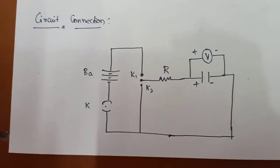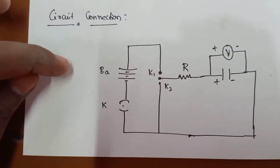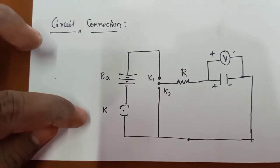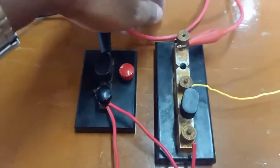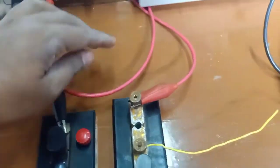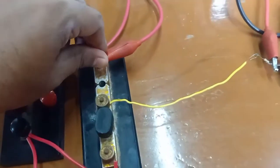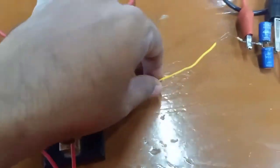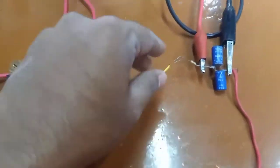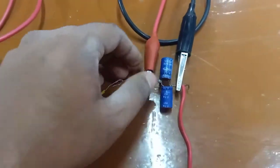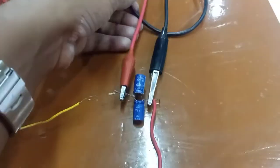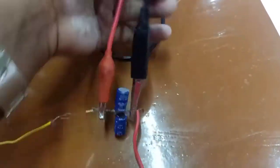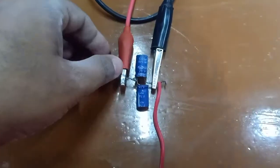This is the circuit connection. The battery negative is connected to the plug key K, and the battery positive is connected to another key K1. The middle terminal tapping point is connected to the resistor R, and the junction between the capacitor and the resistor is taken outside.